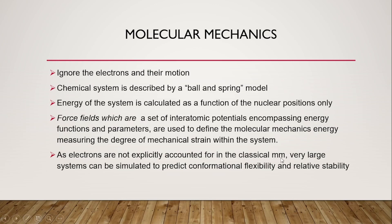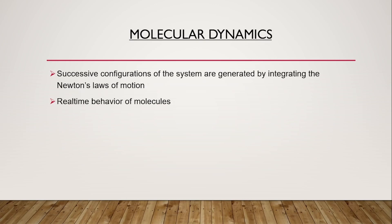Since electrons are not explicitly accounted for in classical molecular mechanics, very large systems can be simulated to predict conformational flexibility and relative stability. Because we are not considering each individual electron, very large systems can be explained using molecular mechanics — something you cannot do with ab initio or DFT methods. Quantum mechanical methods require a lot of computing power, so they are limited to smaller systems.